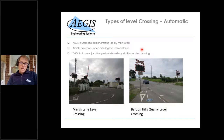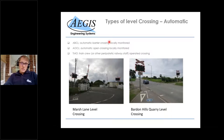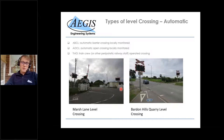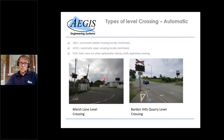An ABCL — automatic barrier crossing locally monitored — is shown here at Marsh Lane. The 'locally monitored' part refers to the train driver. These are on lower-speed lines, usually single track but not necessarily. At Marsh Lane the line speed was 40 miles an hour, which is still fairly quick if there's a vehicle on the crossing. Network Rail are looking at these types and trying to remove them from the network.